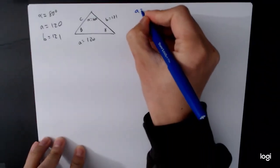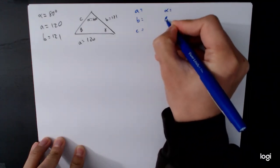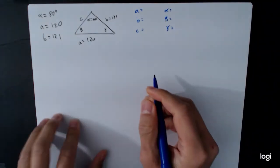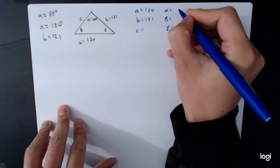So A equals, B equals, C equals, alpha equals, beta equals, gamma equals. So our A is 120, our B is 121, and our alpha was 80 degrees.